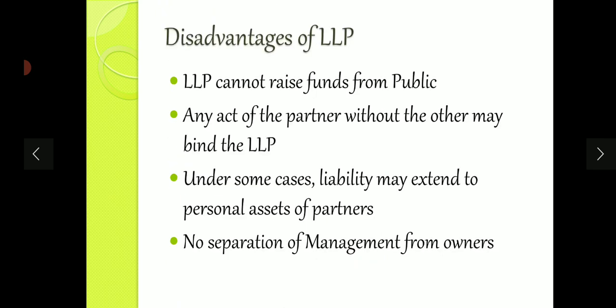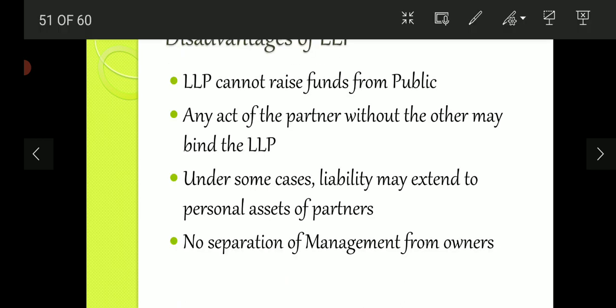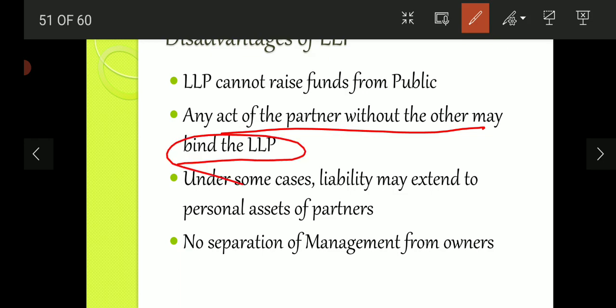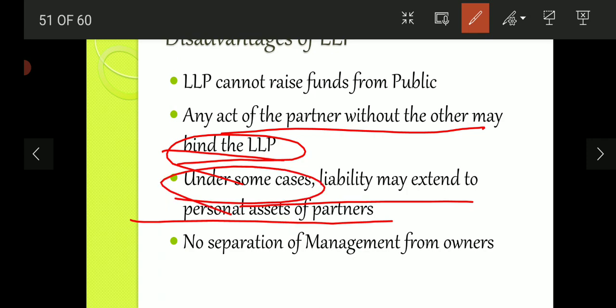Now let's look at the disadvantages of LLP. First, LLP cannot raise funds from the public — in a company you can generate funds from the public, but in LLP only partners can contribute. Second, any act of a partner can bind the LLP — if a partner enters into a contract with someone, the LLP becomes bound. Third, in some cases liability may extend to personal assets — for example, in case of proven fraud, partners' personal assets can also be used.